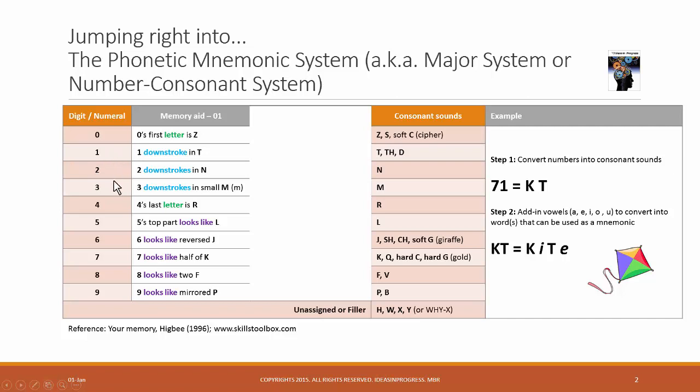For digits 1 to 3, the consonant sound T has one downstroke in T. For N, there are two downstrokes. And then for digit 3, if you write M in small letter, then it's written with three downstrokes. And that's the connection.